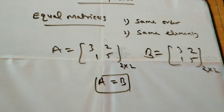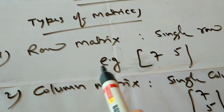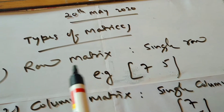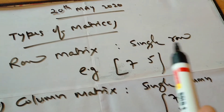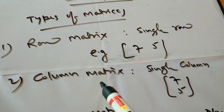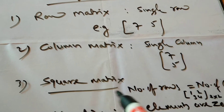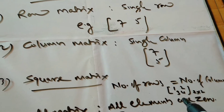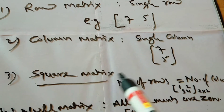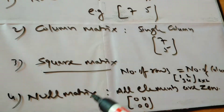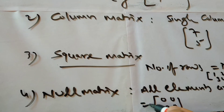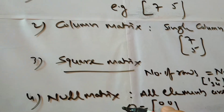Now let's look at the types of matrices. First is the row matrix — a matrix having a single row. Next is the column matrix — a matrix having a single column. Then there is the square matrix — where the number of rows equals the number of columns. For example, a matrix with two rows and two columns is a square matrix. Then we have the null matrix, where all elements are zero, denoted by O.